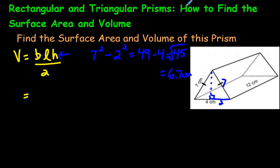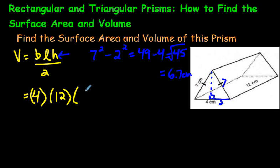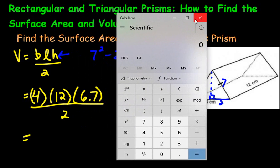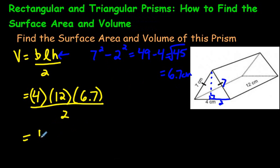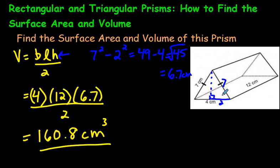Now we have all the information we need for volume. The base is 4, the length from one end to the other is 12, and the height is 6.7 centimeters. We take 4 times 12 times 6.7 and then divide by 2. Using a calculator: 4 times 12 times 6.7 divided by 2 gives 160.8. So the volume is 160.8 centimeters cubed.